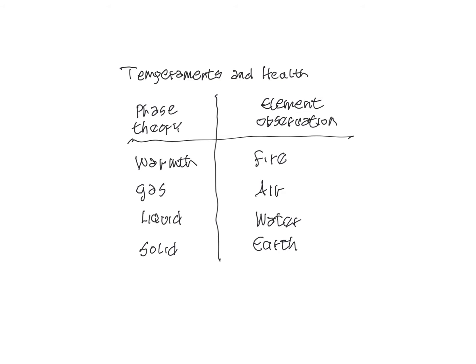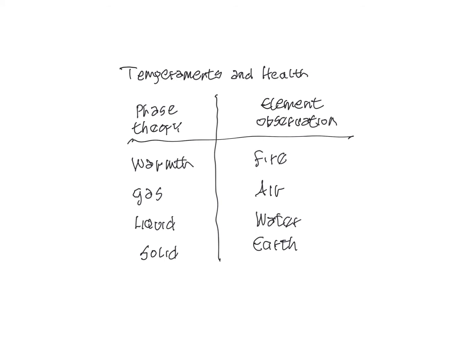In today's scientific worldview, matter can exist theoretically in four states or phases: the solid, the liquid, the gas, and warmth. In a solid, it's considered that the parts that make up a solid are arranged in such a way that they are very closely packed to each other. This gives them very little freedom of movement.